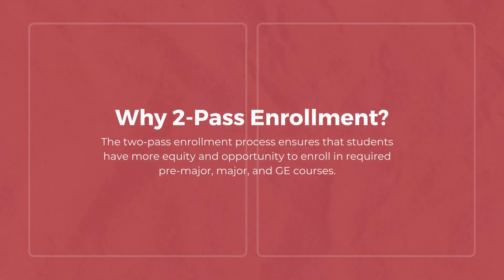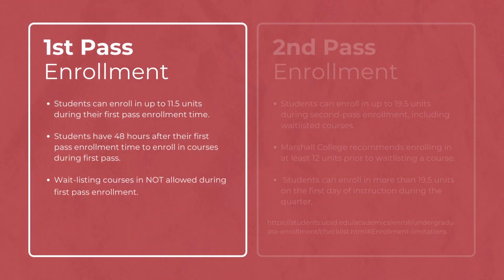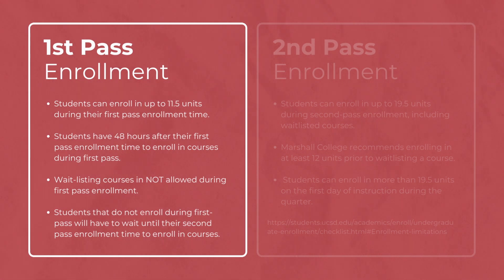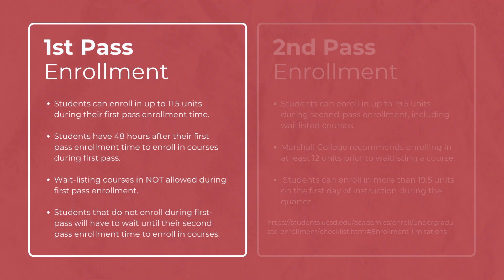The two-pass enrollment process ensures that students have more equity and opportunity to enroll in required pre-major, major, and GE courses. For first pass, students can enroll in up to 11.5 units. Students have 48 hours after their first pass enrollment time to enroll in courses during their first pass. Waitlisting courses is not allowed during first pass enrollment. Students that do not enroll in their first pass will have to wait until their second pass to begin enrolling in courses.